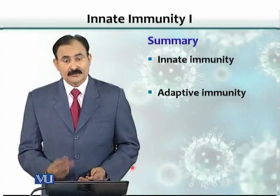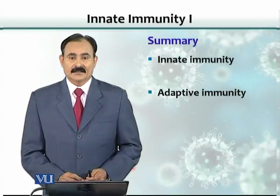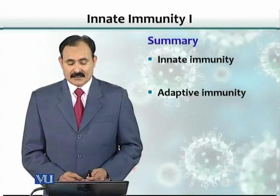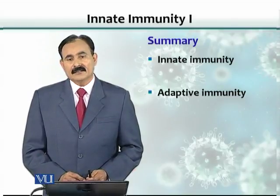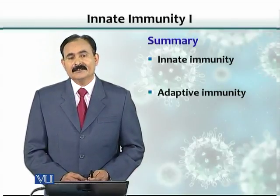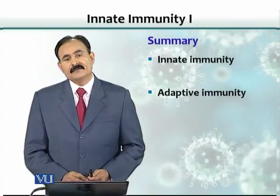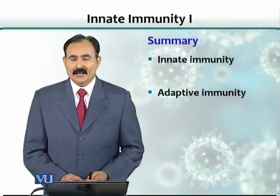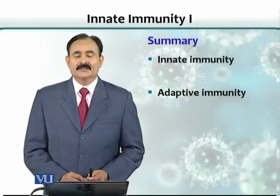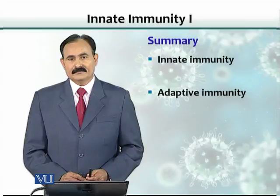In summary, there are two types of immunity: innate immunity, which is naturally present, and adaptive immunity, which we acquire after exposure to an organism. Thank you.